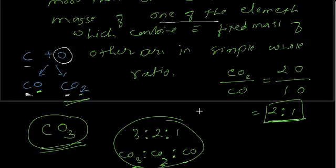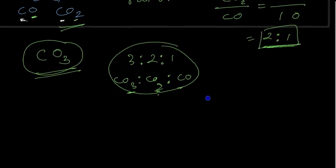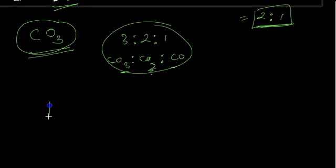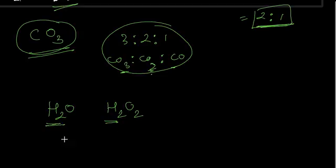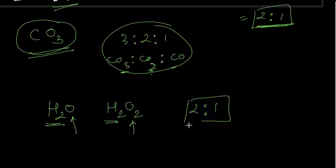This is the Law of Multiple Proportions. We can take more examples. Here's another: H2O and H2O2. The mass of H2 is fixed, and if you take the ratio of oxygens it is 1:2. You can calculate the masses, but since the mass of the atom doesn't change, the ratio will always be that simple whole ratio.